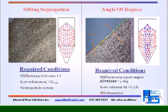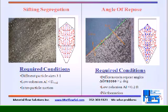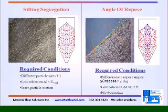Sifting segregation is caused when fine particles sift down through a matrix of coarse particles. The fines must be 2.5 to 3 times smaller than the coarse particles. Both the fines and the coarse must be moderately free-flowing. There must also be some interparticle motion. This mechanism causes a side-to-side pattern.